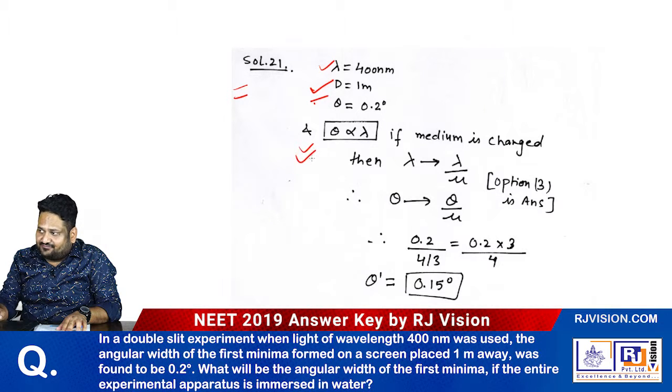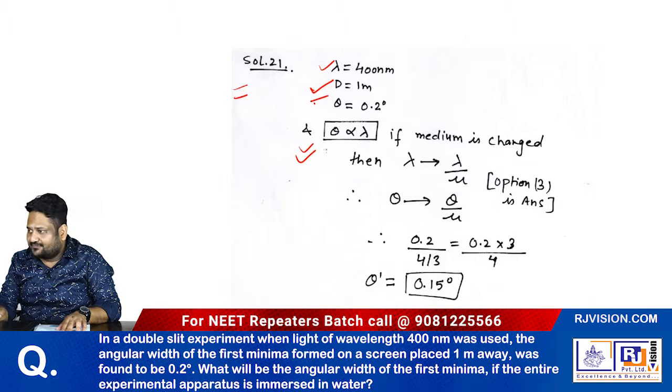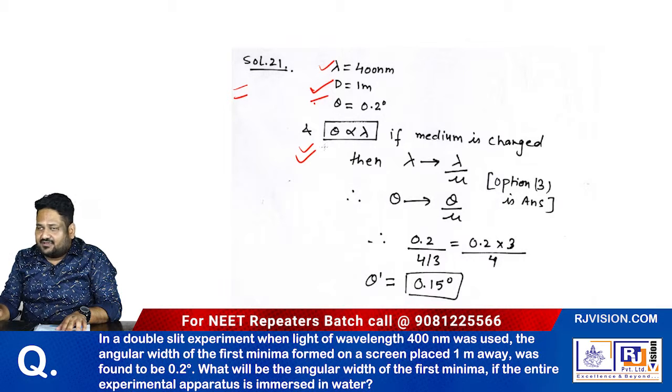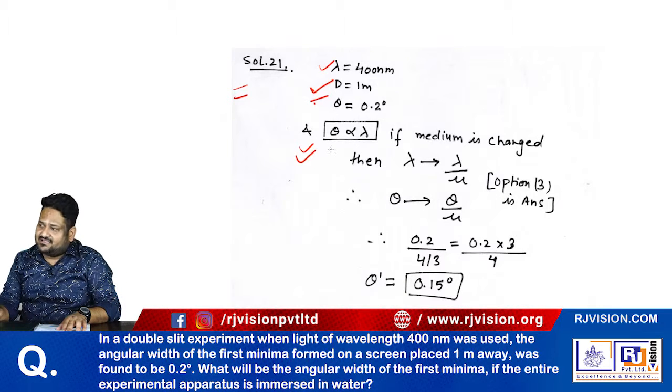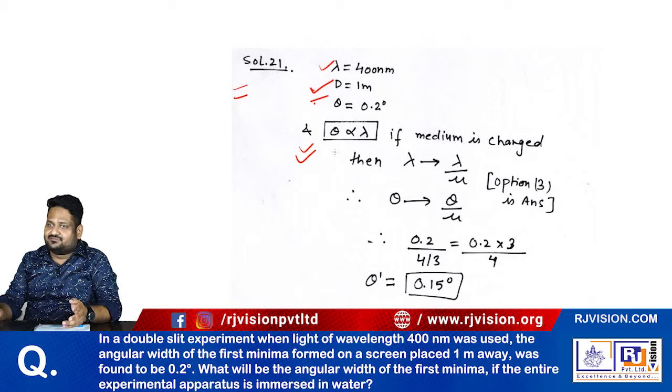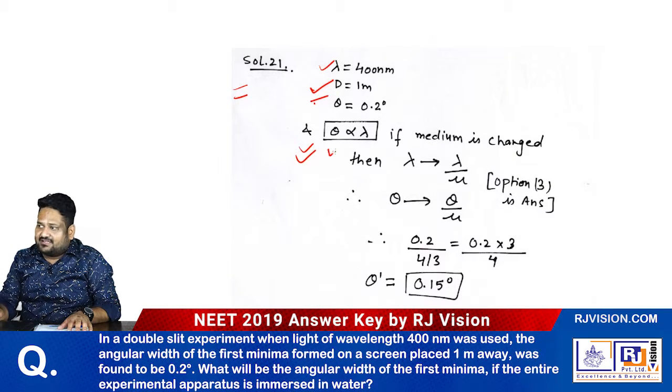What changes occur if it is transferred inside water? According to the formula, theta equals lambda by D, where capital D is same and small d is also same in the question because the whole apparatus is shifted into the liquid.